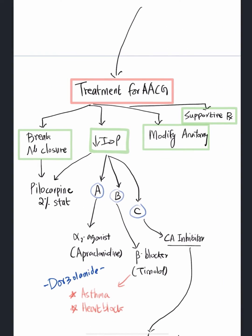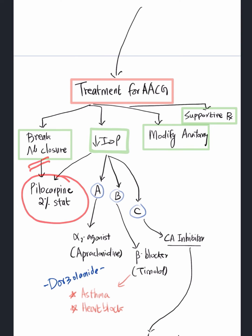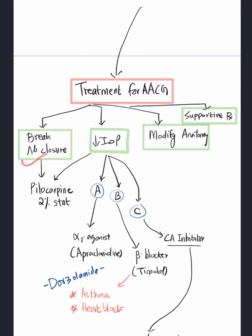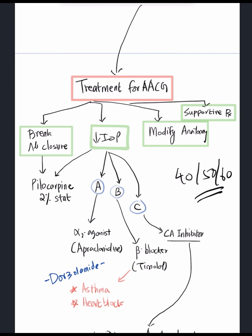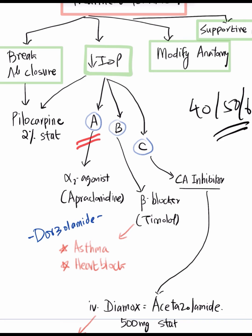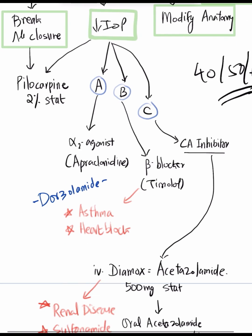In detail, the treatment goals for acute angle closure glaucoma are: (1) break angle closure with pilocarpine 2% stat; (2) reduce intraocular pressure aggressively using the ABC regimen — apraclonidine, timolol, and acetazolamide; (3) modify the angle anatomy; and (4) provide supportive care. Pilocarpine has dual action: breaking angle closure and contributing to IOP reduction. IOP in these patients can be 40, 50, or 60 mmHg, so aggressive treatment is essential.